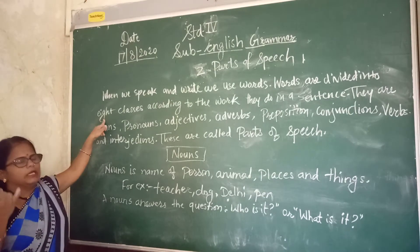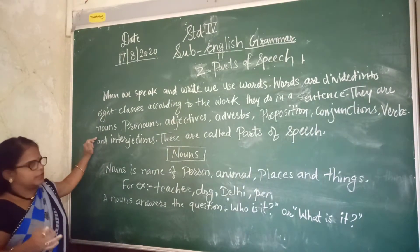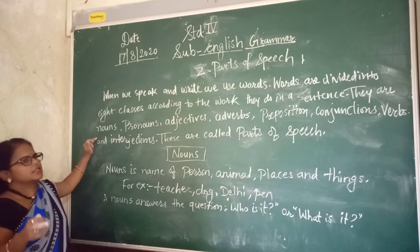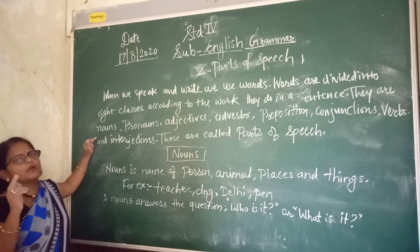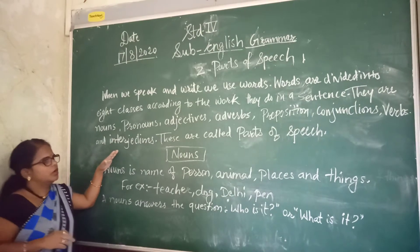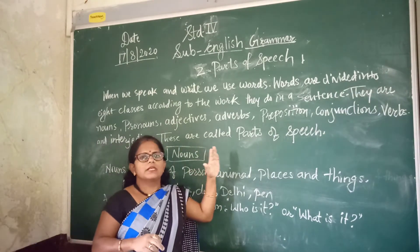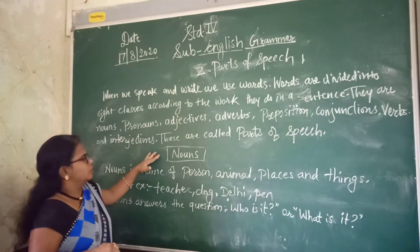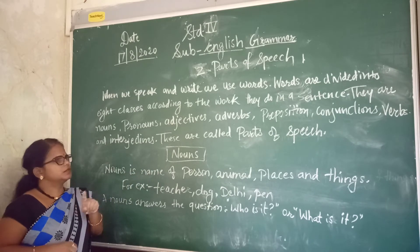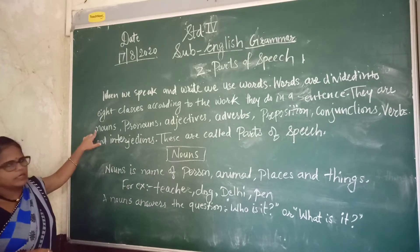Which ones? Noun, pronouns, adjectives, adverbs, prepositions, conjunctions, verbs, and interjections. These are called Parts of Speech. Now, that is the noun. Noun is the first of the parts of speech.